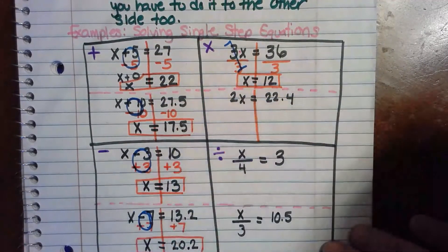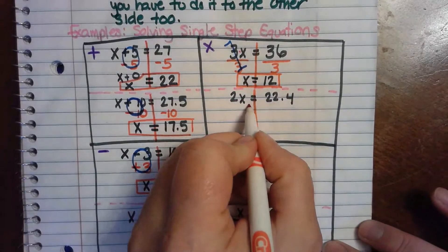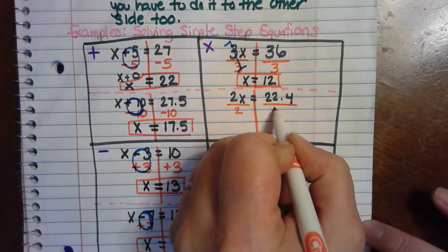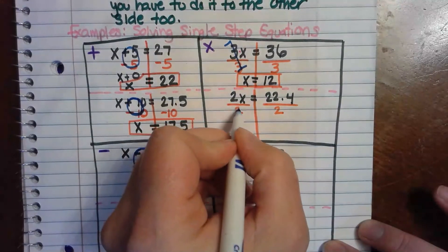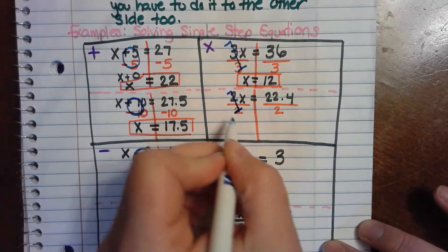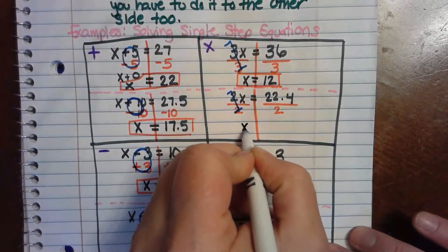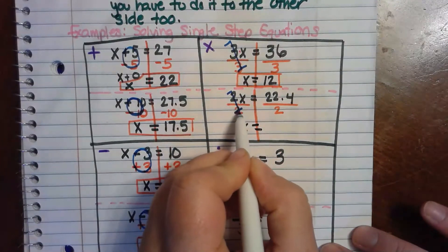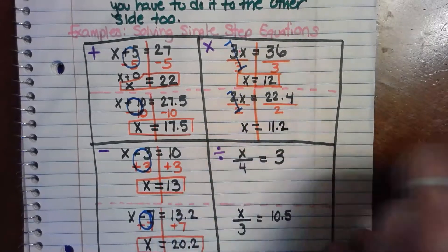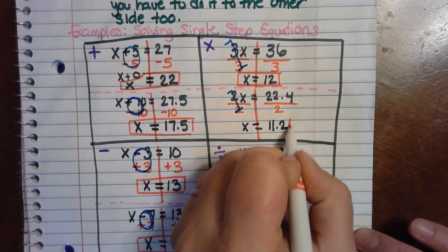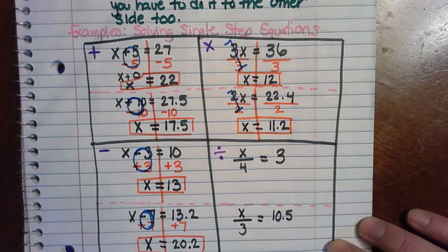Let's try the next one. We want this to become 1x, and since this is multiplication we use the inverse — division. We divide both sides by 2. Two divided by 2 gives us 1, so we have 1x on the left, which is exactly what we wanted. Since we divided this side by 2, we also divide the other side by 2, giving us 11.2. You can see how it would be really difficult to guess your way into that.